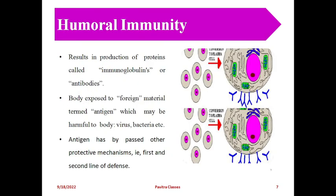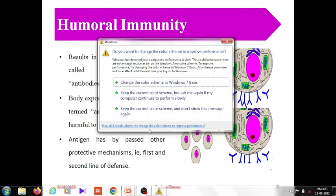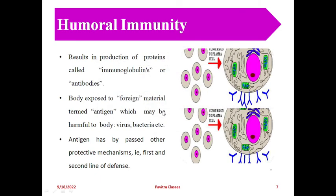The next type is humoral immunity. In this, proteins called immunoglobulins and antibodies are present. Cellular immunity is indirect immunity, but in humoral immunity, immunoglobulins are directly involved. Humoral immunity results in the production of proteins called immunoglobulins or antibodies. When the body is exposed to foreign material termed an antigen - such as viruses or bacteria - that has passed the first and second line defenses, some immunoglobulins and antibodies stop protein production of the antigen.